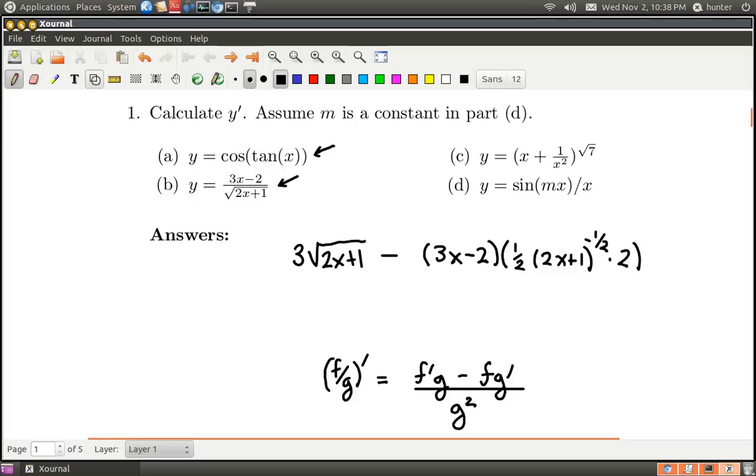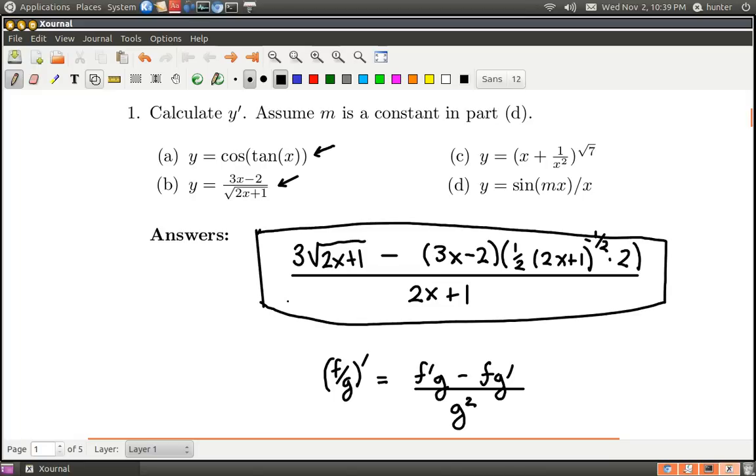Okay, so actually this 1 half and this 2 are going to cancel, but I don't think I'm going to rewrite this stuff over again, so I'll just leave it the way it is. And on the bottom I have to write g squared. When you take the square of a square root, the radical just goes away, and so on the bottom I have 2x plus 1. Okay, so we just did part b here, and that's the answer to part b.